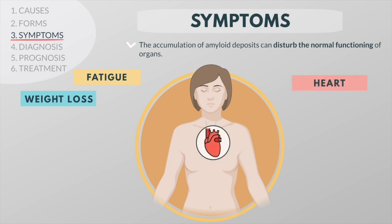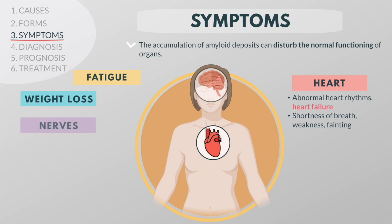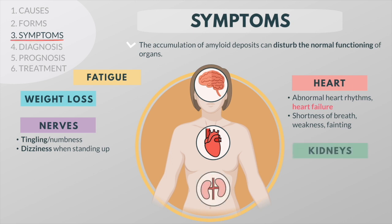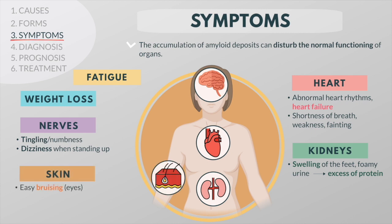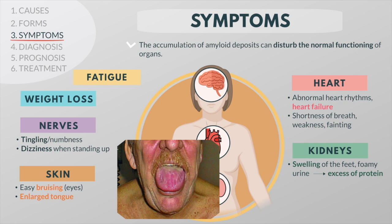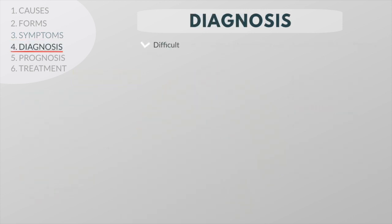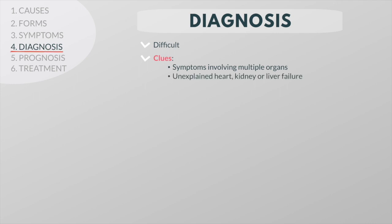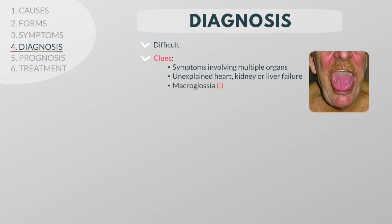When the heart is affected, people may have abnormal heart rhythms or heart failure, causing shortness of breath, weakness, or fainting. When nerves are affected, there may be tingling in the fingers or toes, or dizziness when standing. When the kidneys are affected, people may have swelling of the feet and foamy urine from excess protein. When the skin is involved, easy bruising is common and the tongue is sometimes enlarged. An enlarged tongue is not common but is suggestive of amyloidosis.